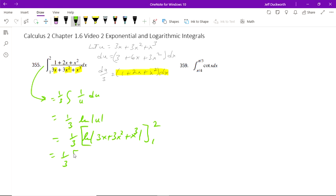So when we plug in the 2, we get ln of 6 plus 3 times 4 is 12, and 2 cubed is 8. When we plug in the ones, we subtract the next part: ln of 3 plus 3 plus 1. So we can lose the absolute value since in both cases we're dealing with positive integers.